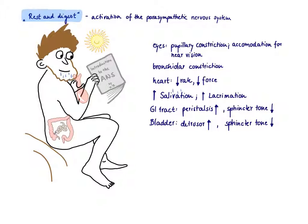GI peristalsis is therefore increased and the sphincters need to relax because now it's time to defecate and urinate. We also want to contract our detrusor muscle to be able to urinate.